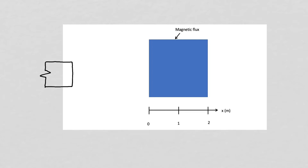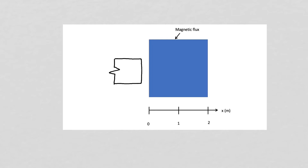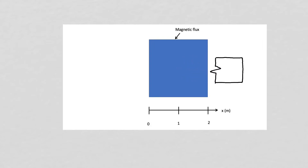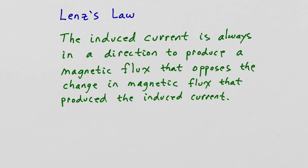Lenz's law is a qualitative description of electromagnetic induction, whereas Faraday's law is a quantitative description. We will use Lenz's law to understand qualitatively what happens as our circuit moves into and out of the magnetic field region. Lenz's law states that the induced current is always in a direction to produce a magnetic flux that opposes the change in magnetic flux that produced the induced current.